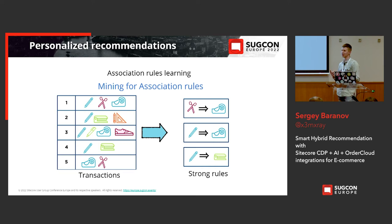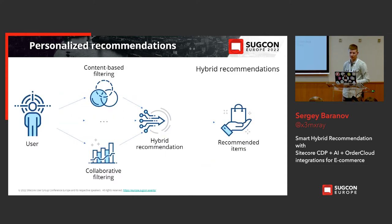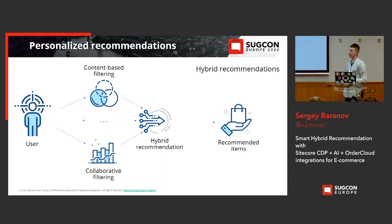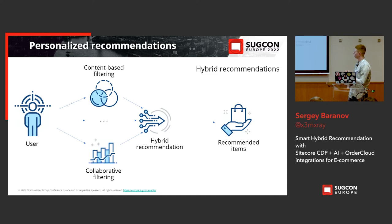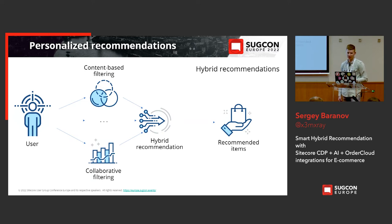In this example, you can see a recommendation for one item, but in a real solution it can be up to five items in one rule. For example, if you have three items in your shopping cart, we can suggest one item that is frequently bought together with those three items. The most commonly used type in commercial solutions is hybrid recommendations — a combination of two or more types of personalized recommendations.